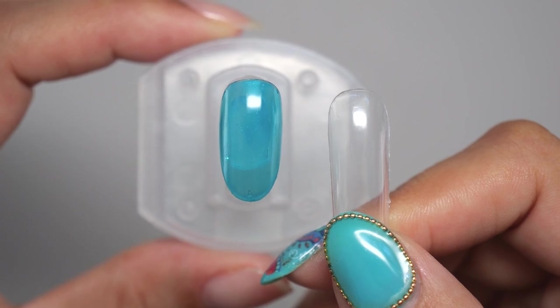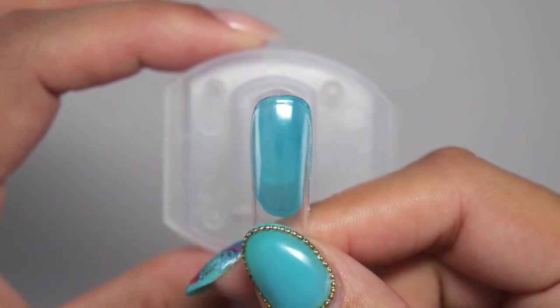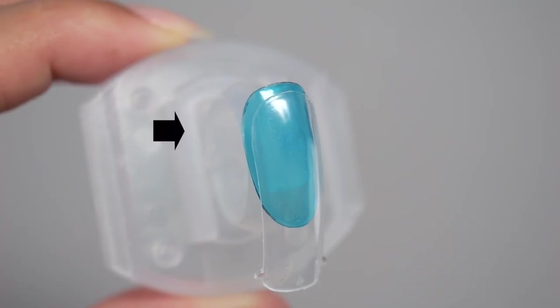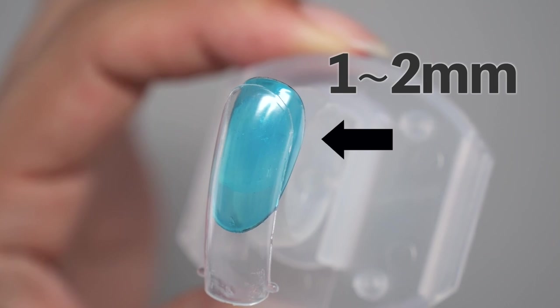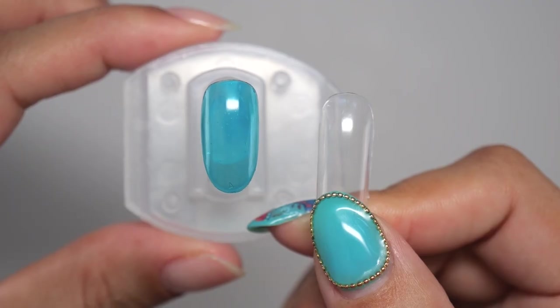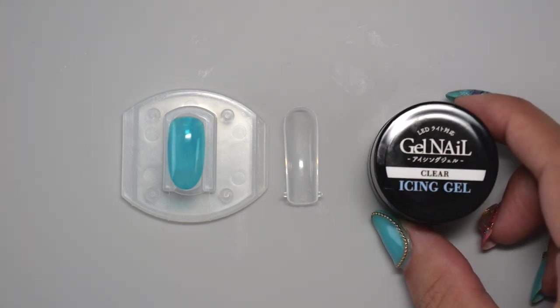First, when choosing a tip size, try to choose one size smaller if possible. The best ones are those that have about 1-2 mm of empty space around the nail. Once you have chosen a tip suitable for your nail, prepare the heart gel or icing gel.